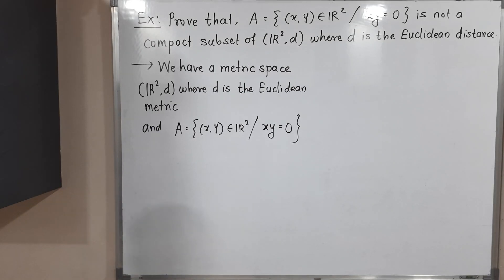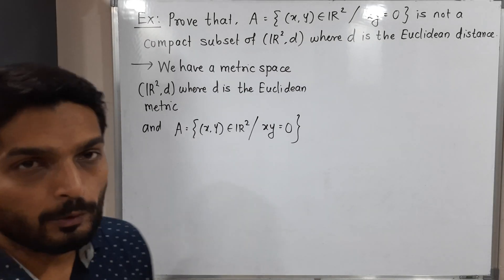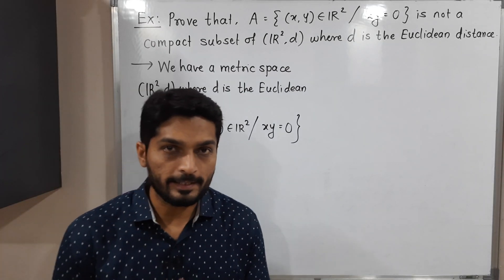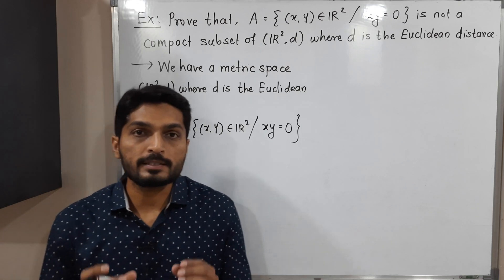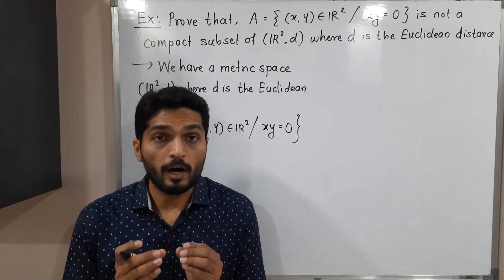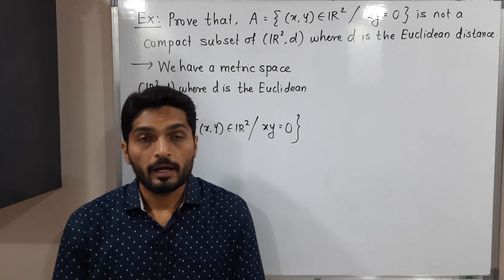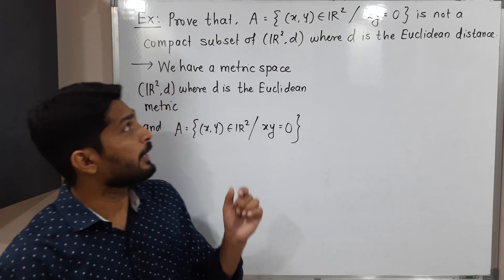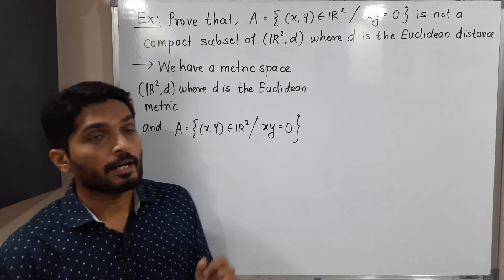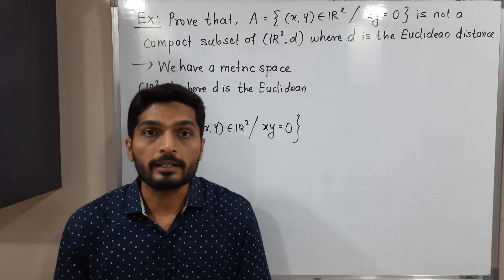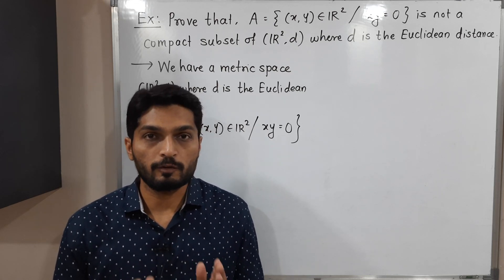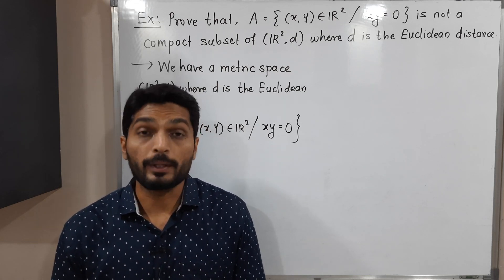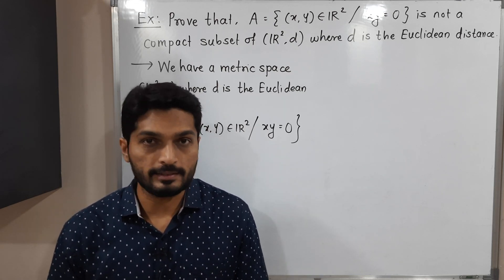Hi everyone. In this video we are going to discuss this example. Here we have one subset of R²D, called it A, and we have to prove that it is not a compact subset of R²D, where D is a Euclidean distance.